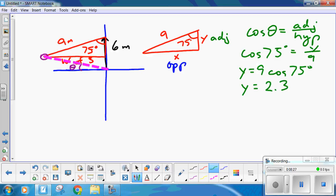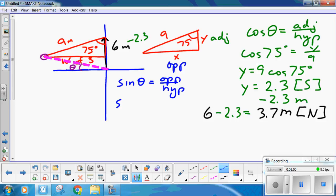And 2.3 meters down. So, you went up 6, minus 2.3, that's a resultant of 3.7 meters north. Now, how far west did you go? Well, that's sine of theta, it's opposite over hypotenuse. Or sine of 75 degrees equals x over 9, 8.7 meters west, or minus 8.7 meters.